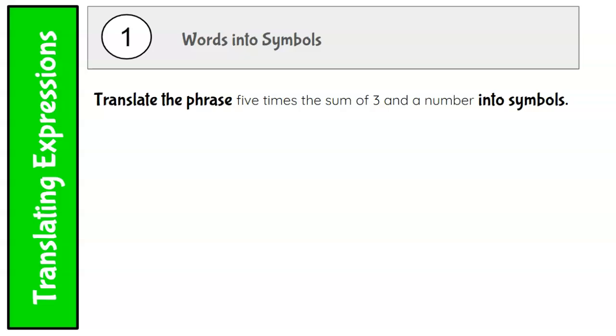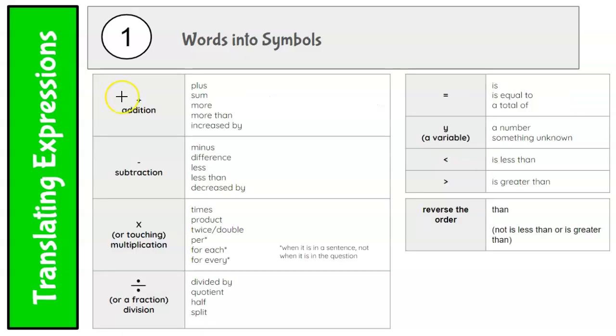So let's go back to this one real quick. It says translate the phrase "five times the sum of three and a number." So sum, we remember, is plus. And whenever you see these words here, let me underline them: sum, difference, product, and quotient.